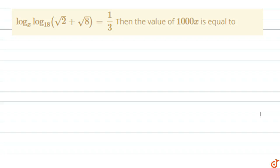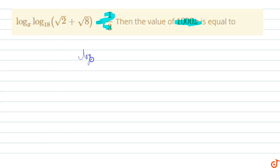In this question, log base x of log(√2 + √8) base 18 equals 1/3. Then the value of 1000x equals — so this will be (1/3) · log base x of log(√2 + √8) base 18 equals 1/3, so this value equals 1.